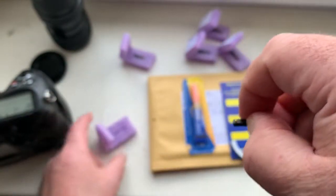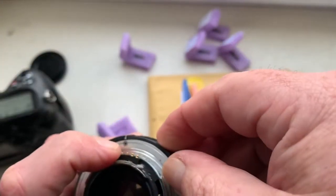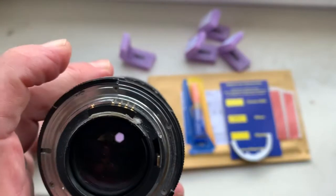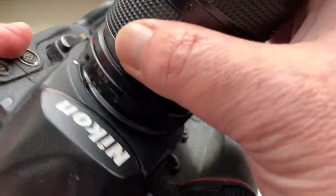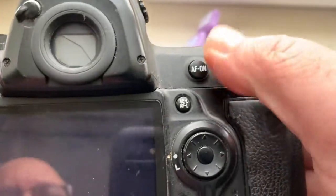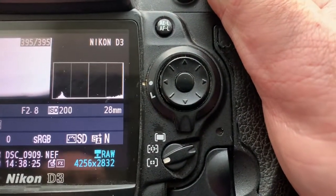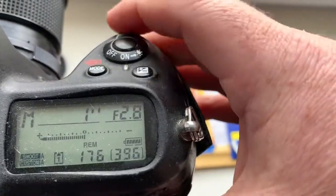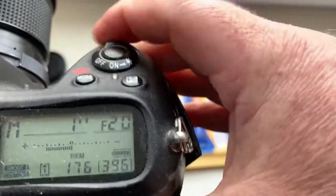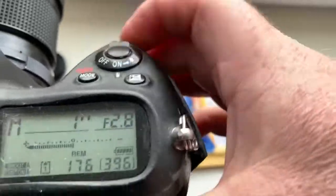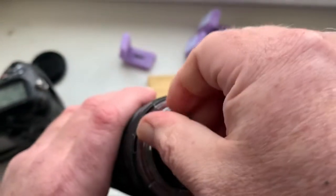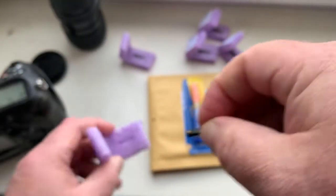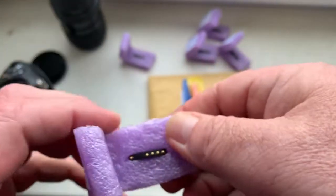Chip number four. Focal lens is 28mm, aperture range from 2.8 to 22. The chip number four.